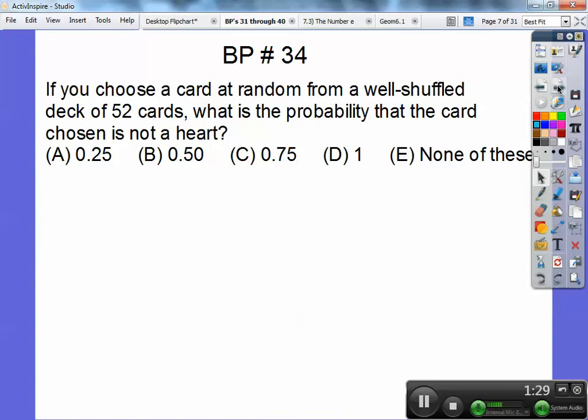If you choose a card at random from a well-shuffled deck of 52 cards, what's the probability that the card is not a heart? Well, since one-fourth of them are hearts, that means three-fourths of them are not hearts. So three-fourths is 0.75. Choice C.